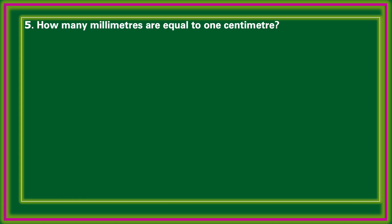How many millimeters are equal to 1 centimeter? Options: 1, 10, 100, 1000. The correct answer: 1 centimeter is equal to 10 millimeters.